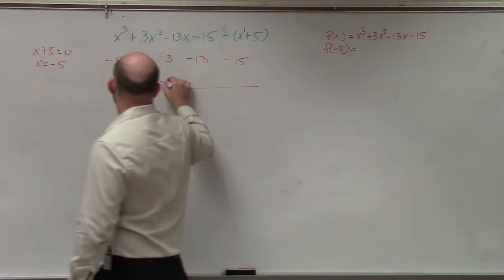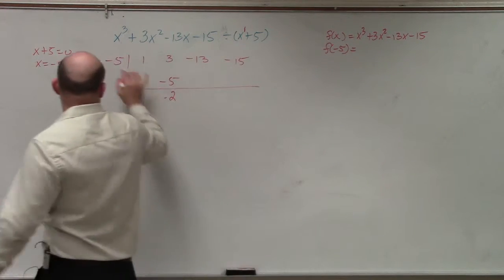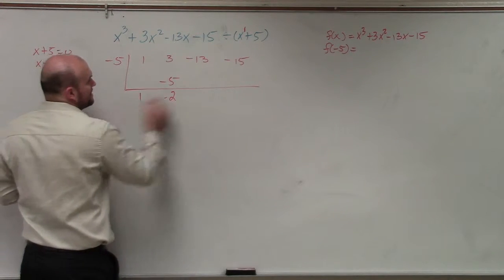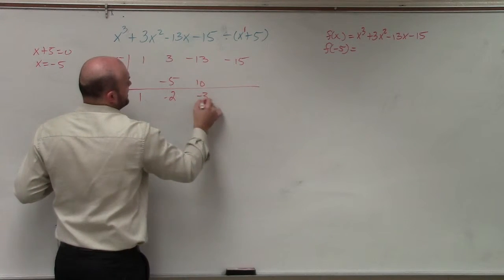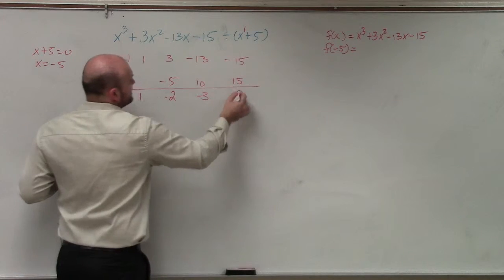Bring down the first term, 1. 1 times negative 5 is negative 5. 3 plus negative 5 is negative 2. Negative 2 times negative 5 is positive 10. Negative 13 plus 10 is negative 3. Negative 3 times negative 5 is positive 15, 0.